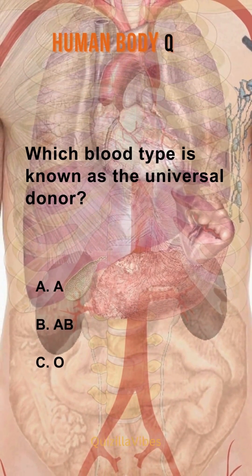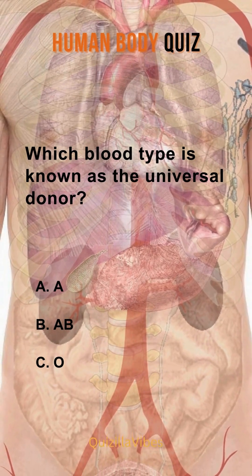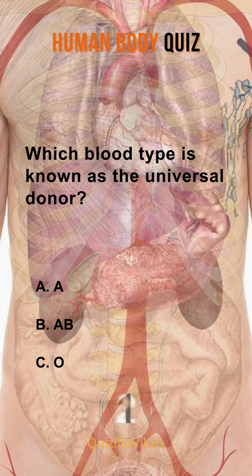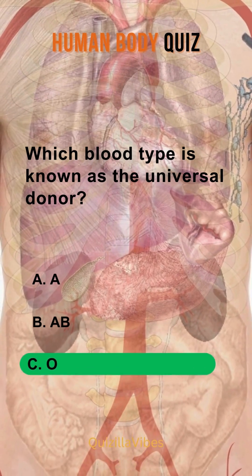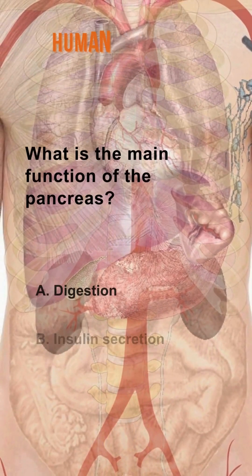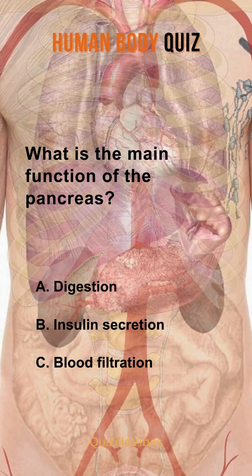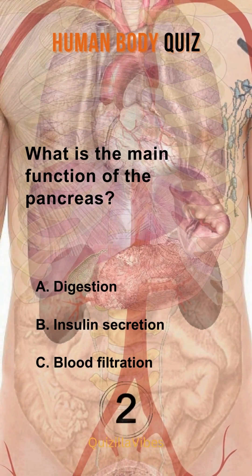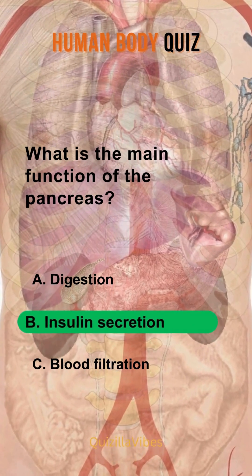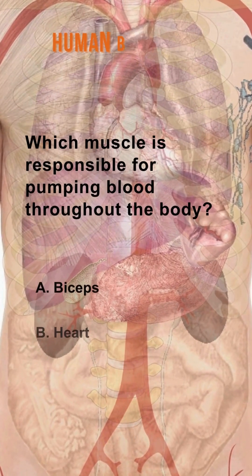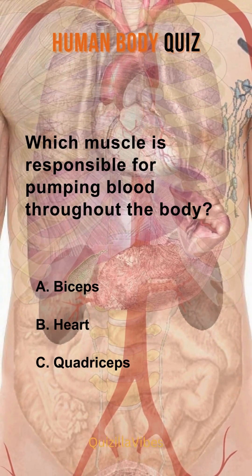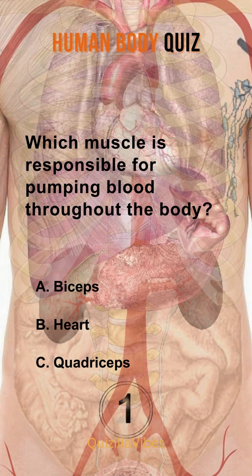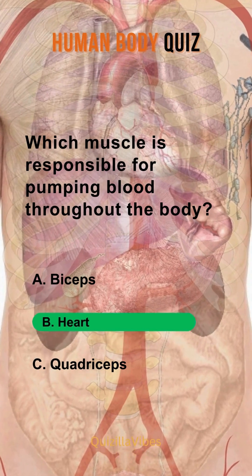Which blood type is known as the universal donor? O. What is the main function of the pancreas? Insulin secretion. Which muscle is responsible for pumping blood throughout the body? Heart.